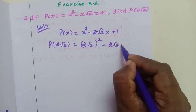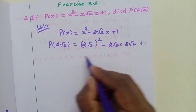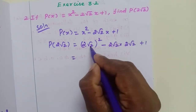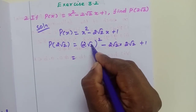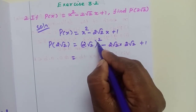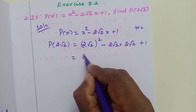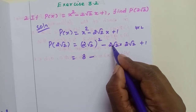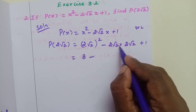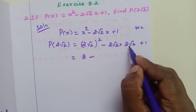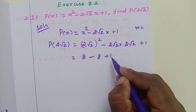So 2 root 2 squared minus 2 root 2 into 2 root 2, plus 1. 2 squared becomes 4, square root of 2 squared becomes 2, so 4 into 2 gives 8. And here also 2 root 2 into root 2 gives 2, so again 8, plus 1.